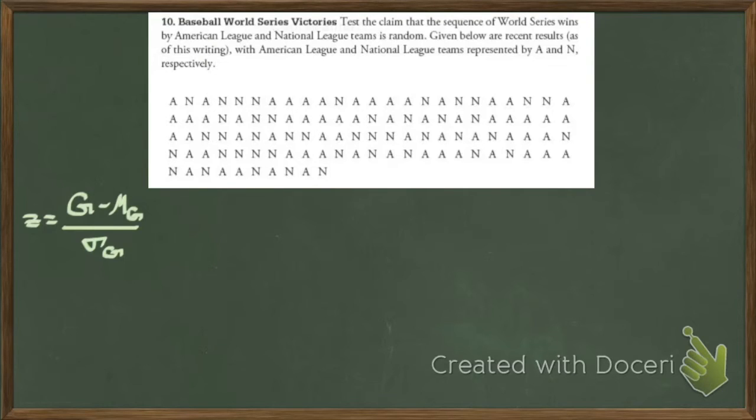Last time, literally it's the last time. So what? We're looking to see whether or not the baseball wins are random, and for the last hundred and how many? Gus? 30. It has 130 games, as of the writing of this, we have that it was American National, American National, American, you know, you get it.